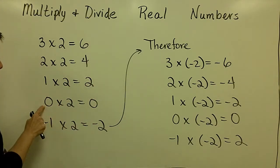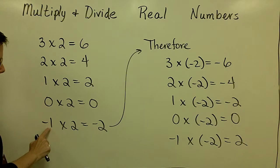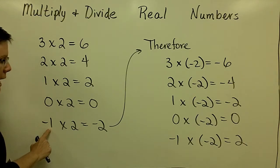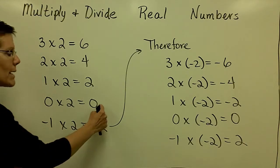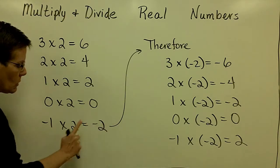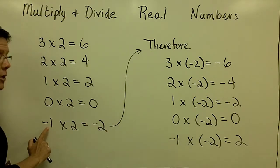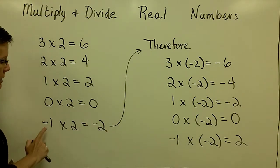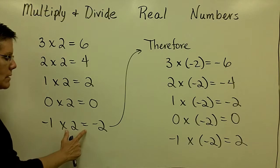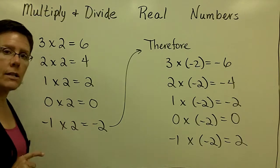And so when I decrease that first factor again by another value of 1, I discover that my answer should go down by 2. And therefore, in that pattern, I discovered that a negative times a positive is a negative answer.